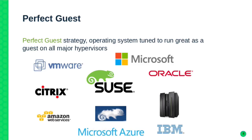For the guest part, there's something called our perfect guest strategy — the aim is to have SUSE Enterprise Server running perfectly independent of the underlying environment. We support SUSE hypervisors, both KVM and Xen, but also third-party hypervisors like VMware, Hyper-V, Oracle VM, and Citrix, as well as public clouds and OpenStack-based or Microsoft Azure environments. The aim is for SUSE Enterprise Server to be a perfect guest in all these environments.